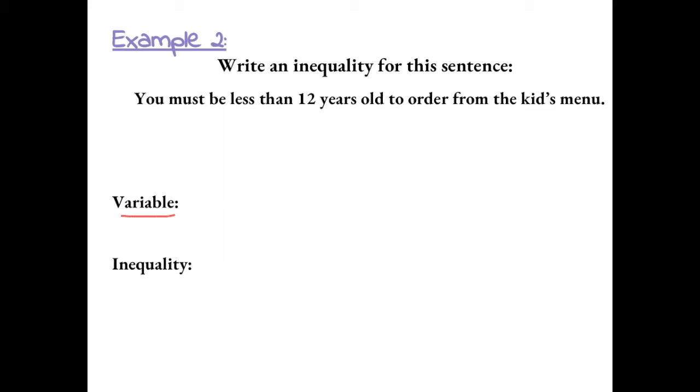So first, let's set a variable for how old you must be. I'm going to use A to represent age. Your age must be less than 12 years old. We can show this by writing A less than 12 to order from the kids menu.